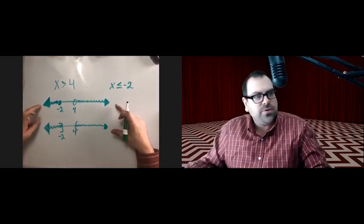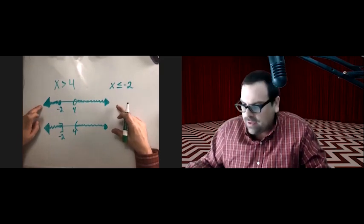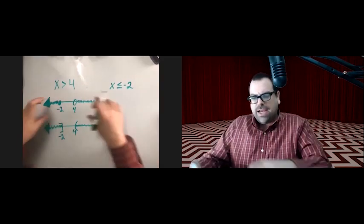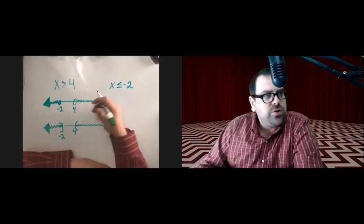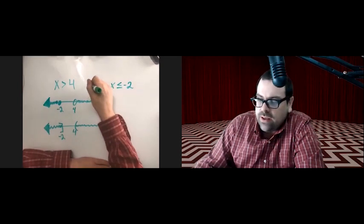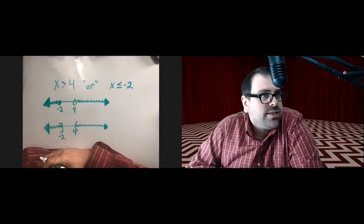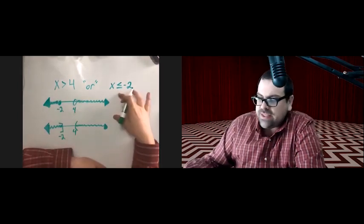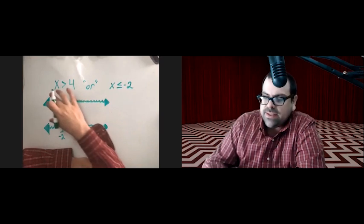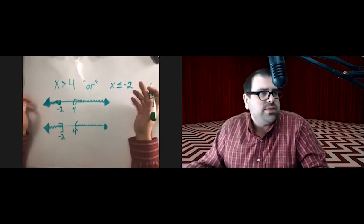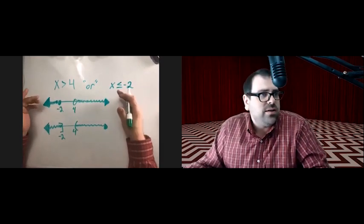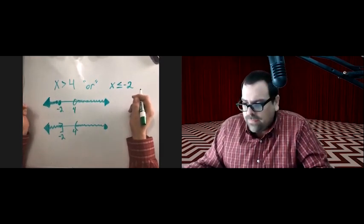Now these are both on the same number line. We saw that in order to join two inequalities together, that's called a union — that is an OR statement. The fact that we see both of them together means we are taking the union; we have an OR.